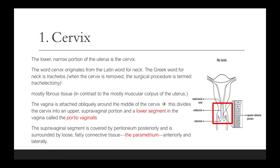The cervix is mostly composed of fibrous tissue, which is in contrast to the mostly muscular corpus of the uterus. The vagina is attached obliquely around the middle of the cervix, and this divides the cervix into an upper supravaginal portion and a lower segment in the vagina called the portia vaginalis. The supravaginal segment is covered by peritoneum posteriorly and is surrounded by a loose fatty connective tissue — the parametrium — anteriorly and laterally.